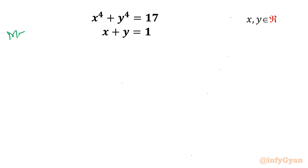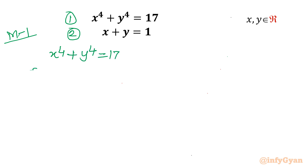Let me begin with Method 1 using algebraic identities. Equation 1 is x⁴ + y⁴ = 17, and Equation 2 is x + y = 1. I can write x⁴ + y⁴ as (x² + y²)² minus 2x²y², since (x² + y²)² expands to x⁴ + 2x²y² + y⁴.